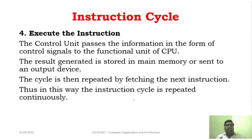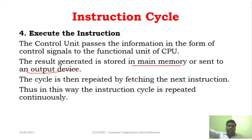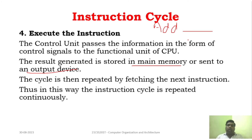After executing the instruction, the processor has two options: it can store the result in main memory, or it can send it to the output device. If it wants to send to the output device, it does so directly. If it wants to store the result, it gives the address location and the result, sending them to MAR, which then stores the result in the given address. This cycle then repeats — this is called the instruction cycle.